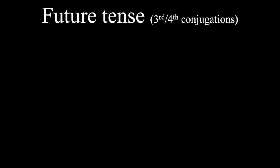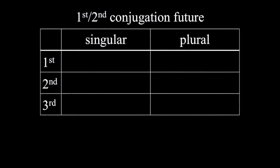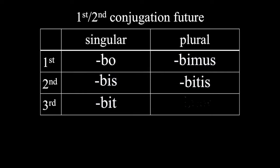First, let's look back at the future tense for first and second conjugation verbs, which we've already learned. The endings for that tense are bo, bis, bit, bimus, bitis, and bunt.